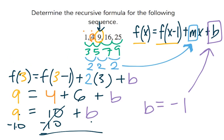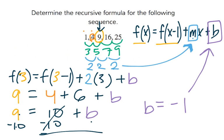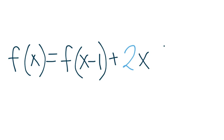plus mx. And m is 2 here, so plus 2x, and then plus b, which we found is negative 1, so minus 1.